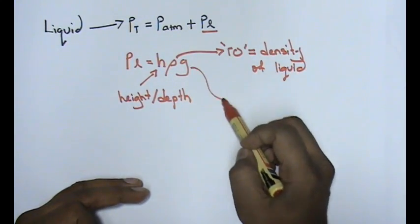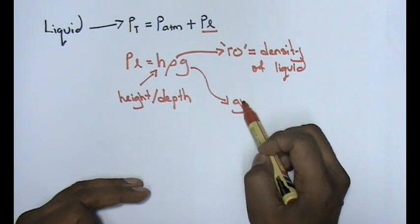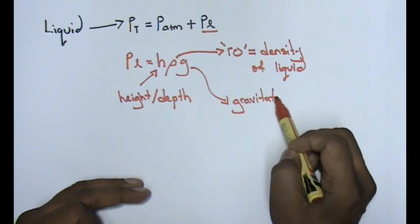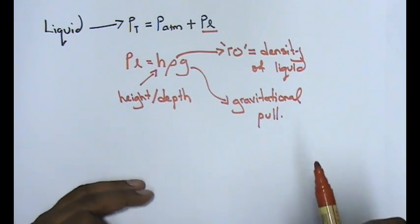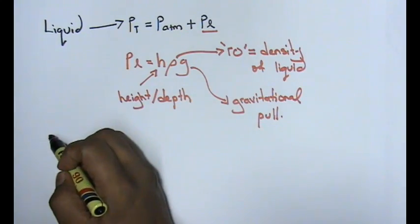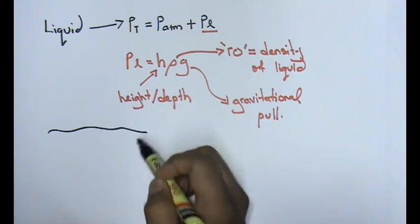g refers to your gravitational pull. Now let us take one simple example and see how we can move from there.